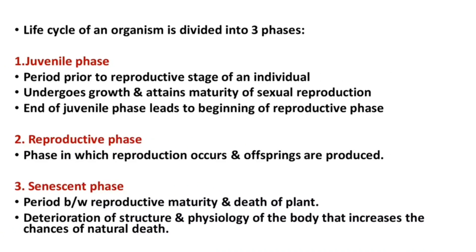The life cycle of an organism is divided into three phases. The first one is the juvenile phase. It is a period prior to the reproductive stage of an organism.